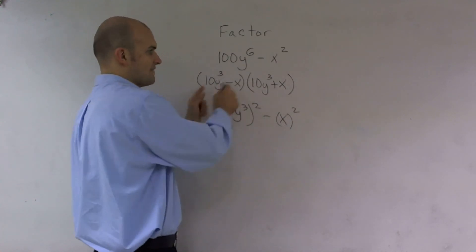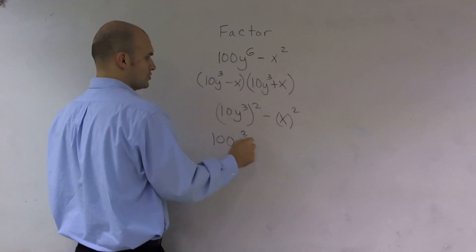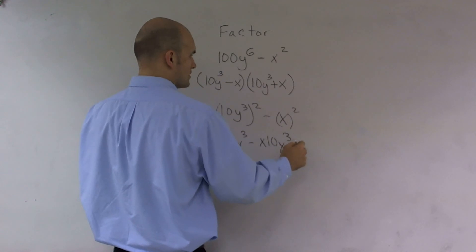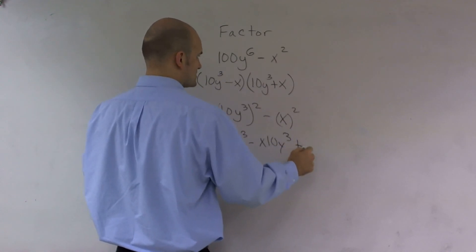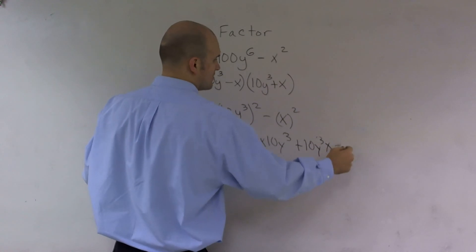If I was to foil this out, I would get 100y^6 minus 10xy^3 plus 10xy^3, and then minus x squared.